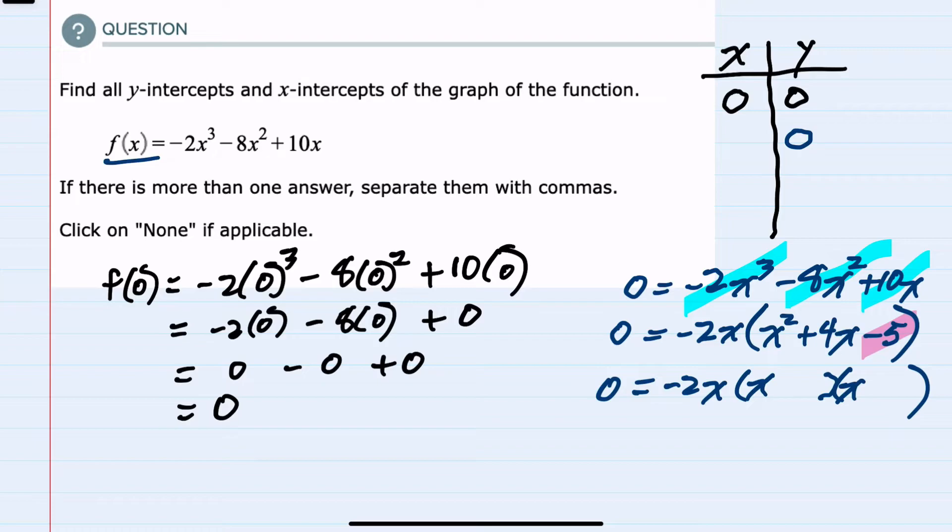If that were a plus 5 and a minus 1, then we would have plus 5x and minus 1x which would combine to be 4x. So we have factored completely on the right hand side.